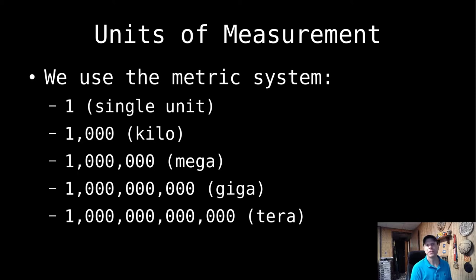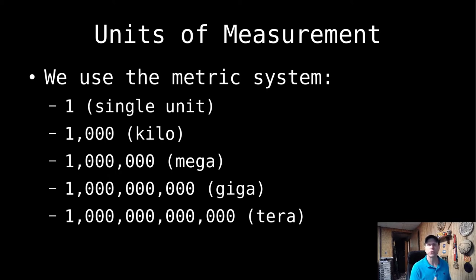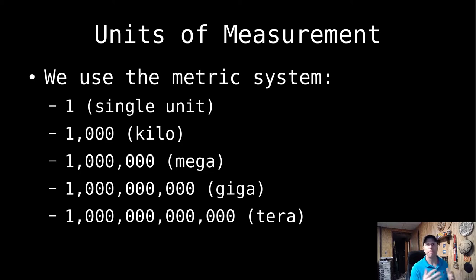Going forward, there are lots of numbers and abbreviations you'll see when looking at these components, so we need to understand a little bit about the metric system. If I have a single unit of something — whether that's a bit or a transfer rate — as soon as I get to a thousand of them I put 'kilo' in front of it. A million is 'mega,' a billion is 'giga,' and a trillion is 'tera.' So when thinking about hard drive size, it doesn't make sense to think in single bits.